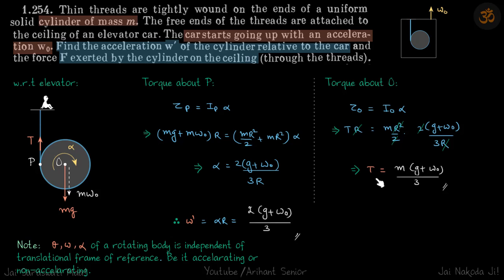Theta, omega, alpha of a rotating body is independent of translational frame of reference, be it accelerating or non-accelerating. So this point O was moving down, but still when we wrote the torque equation about O, we got the same alpha which we got with respect to this point which was at rest.